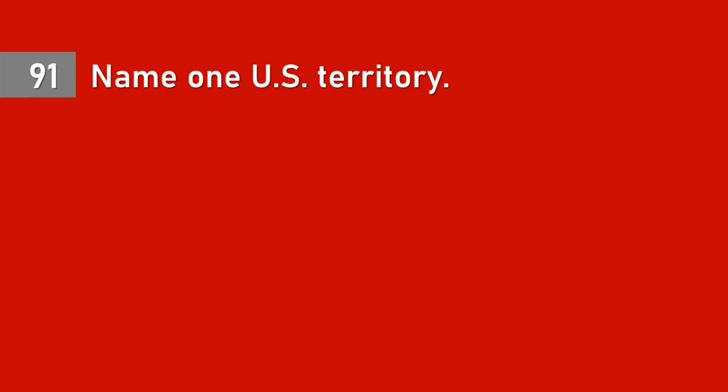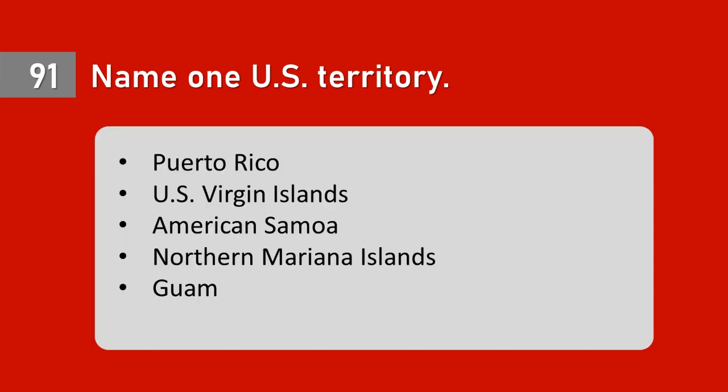Question 91: Name one U.S. territory. Puerto Rico, U.S. Virgin Islands, American Samoa, Northern Mariana Islands, Guam.